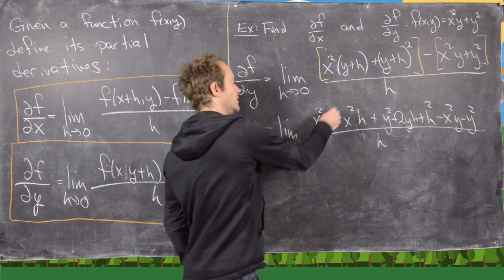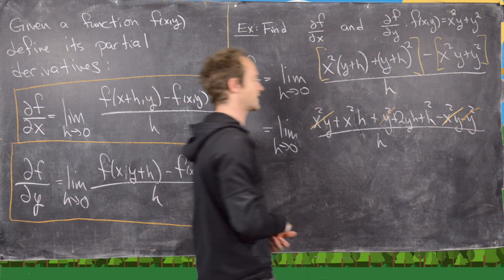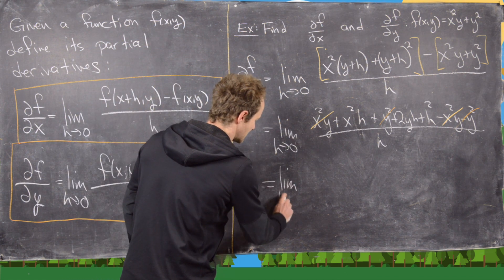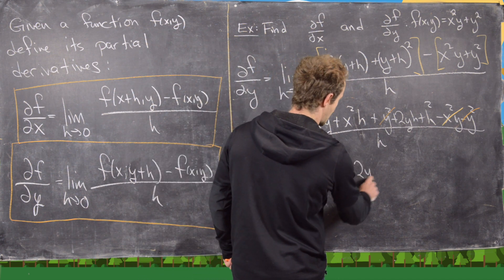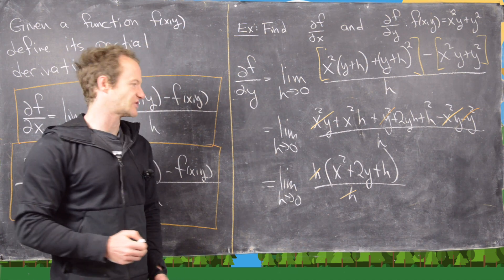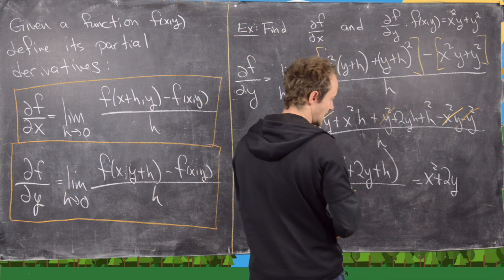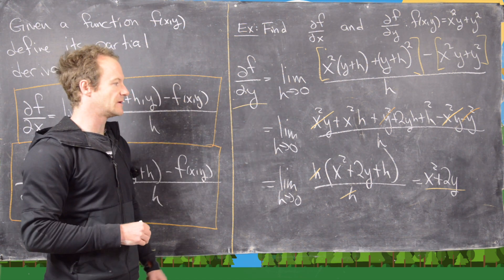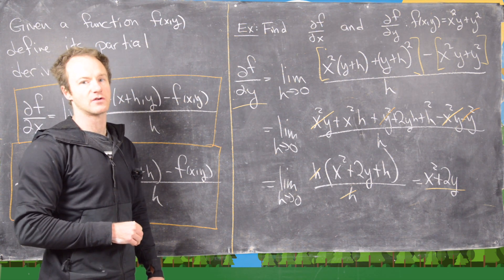Now let's see what can cancel. The x squared y terms cancel, and the y squared terms cancel. We're left with something we can factor h out of, giving the limit as h goes to 0 of h times (x squared plus 2y plus h) all over h. These cancel, and letting h tend to 0 gives us x squared plus 2y. Looking at the original function, this is just what we got by treating x as a constant and taking the derivative with respect to y.